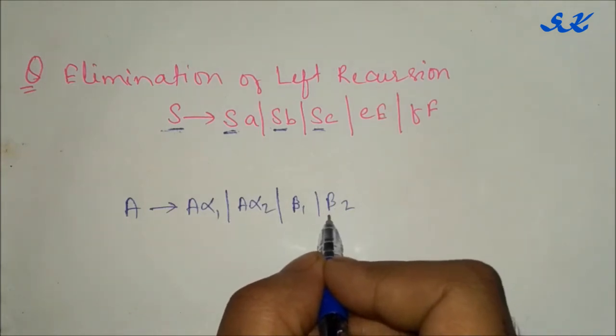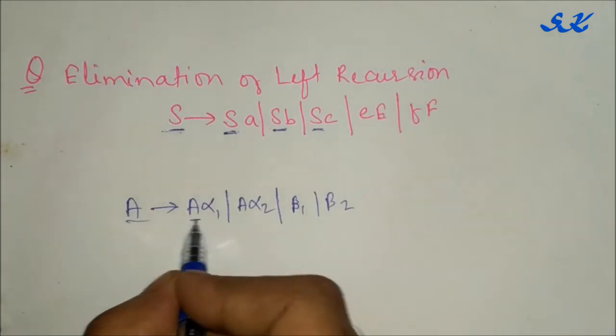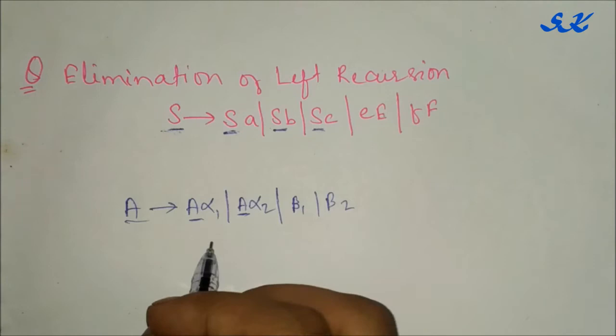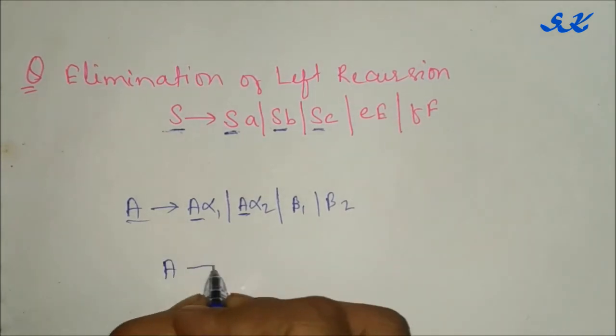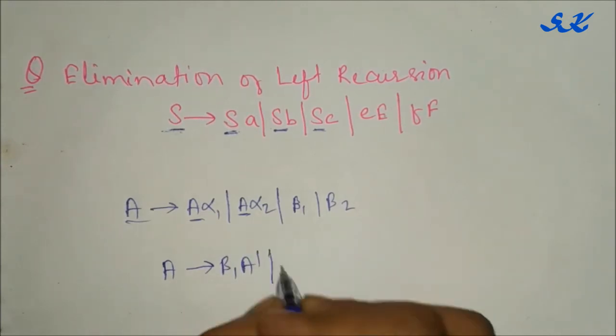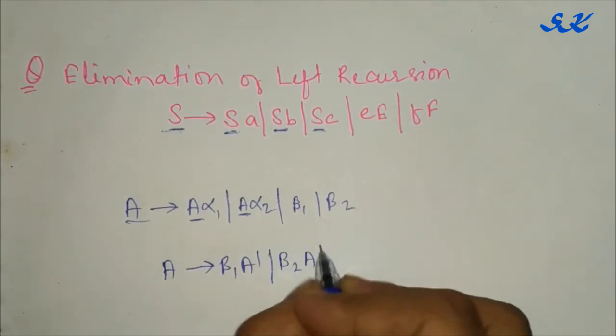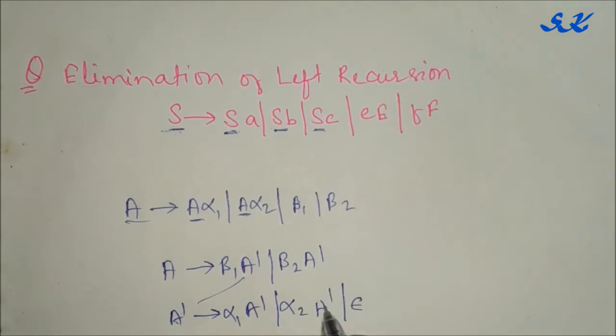To remove left recursion from this, we write this grammar as A goes to beta 1 A dash, beta 2 A dash. Again, A dash will be alpha 1 A dash, alpha 2 A dash, and epsilon.